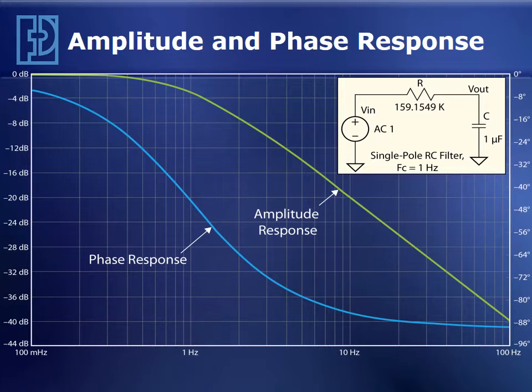The phase response, on the other hand, is showing a phase shift in degrees input to output versus frequency. At low frequency, we have very little phase shift. At the cutoff frequency, we've got about 45 degrees of phase shift. And ultimately, at the high frequency, this filter has 90 degrees of phase shift, which is what you get through a capacitive element.